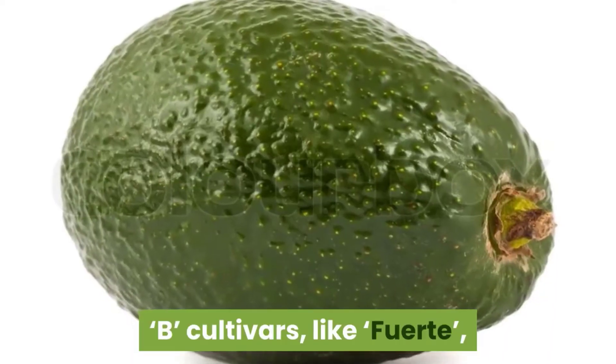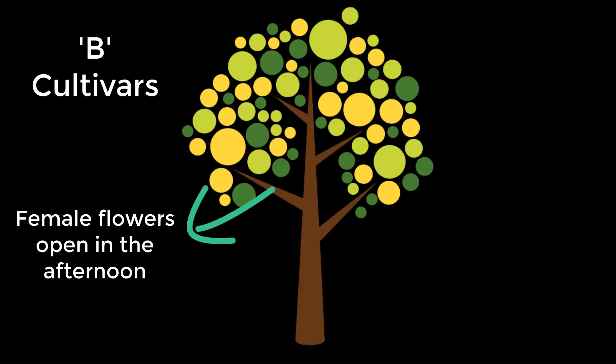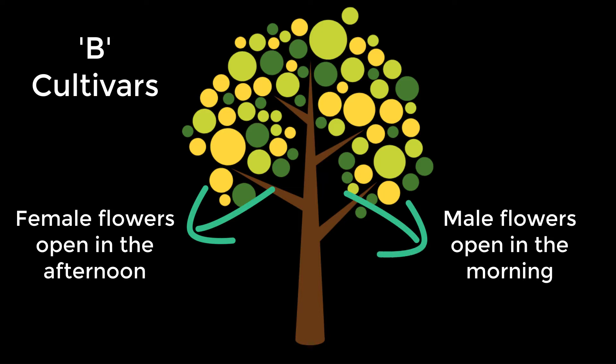B cultivars, like Fuerte, have female flowers open in the afternoon, which close overnight and open the following morning in the male phase.